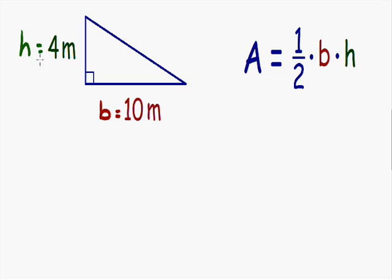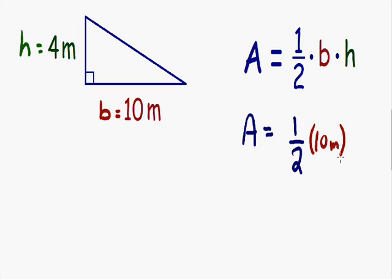Now that we've found our base and our height, we can plug everything into our formula. The area is going to be equal to one half times the base. We know the base is 10 meters, so I'm going to plug in 10 meters. This is multiplied by the height, and we know the height is 4 meters, so I'm going to plug in 4 meters. Now we just multiply everything together: one half times 10 is 5, and 5 times 4 is equal to 20.